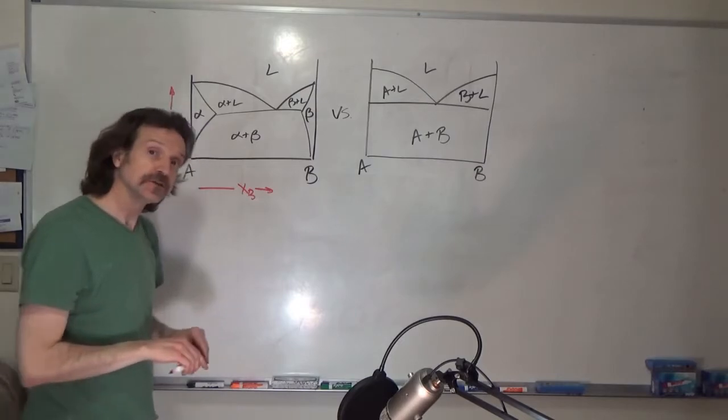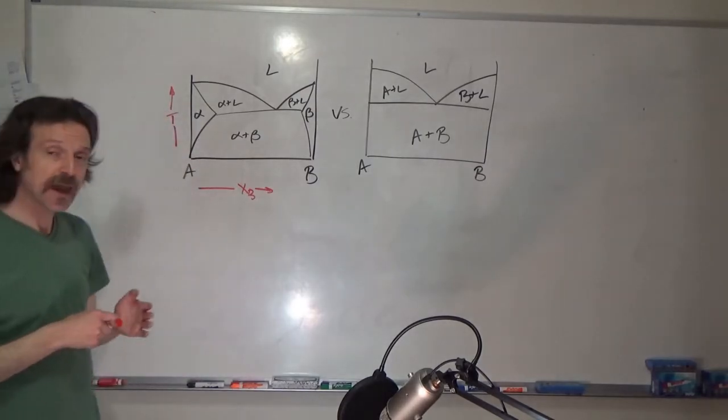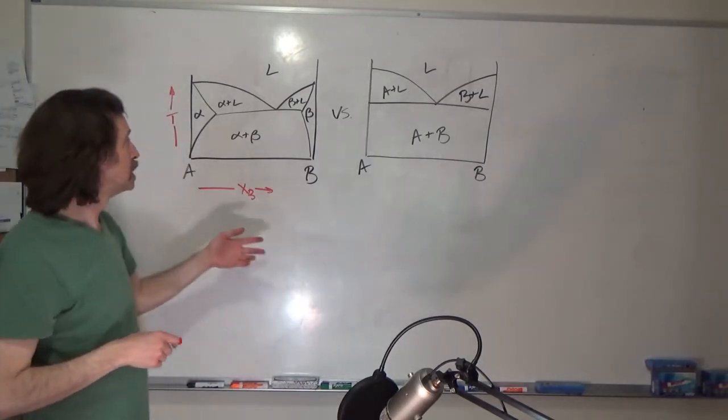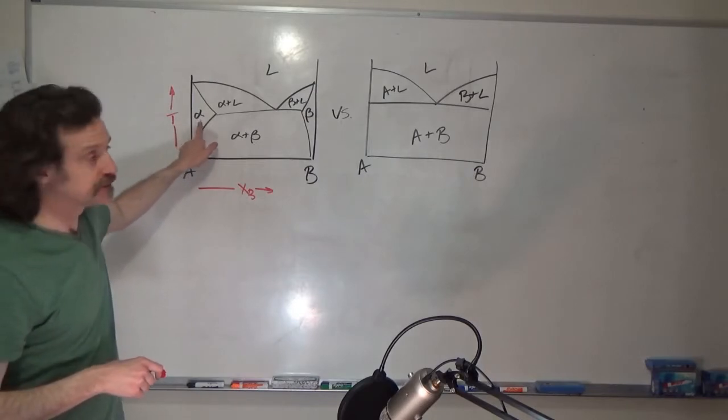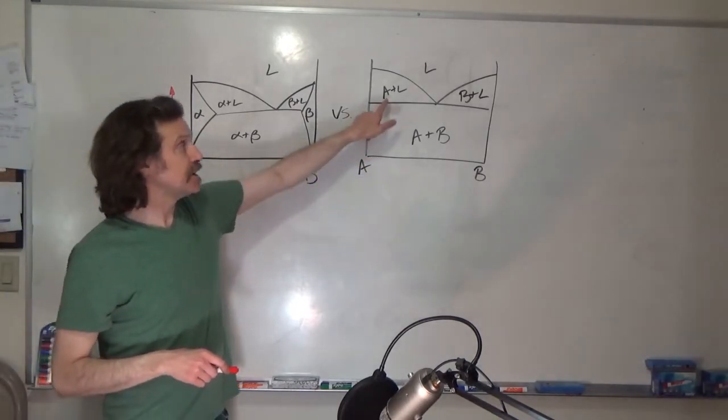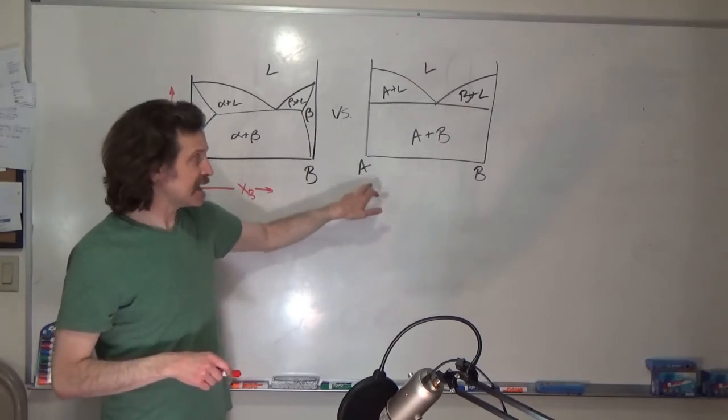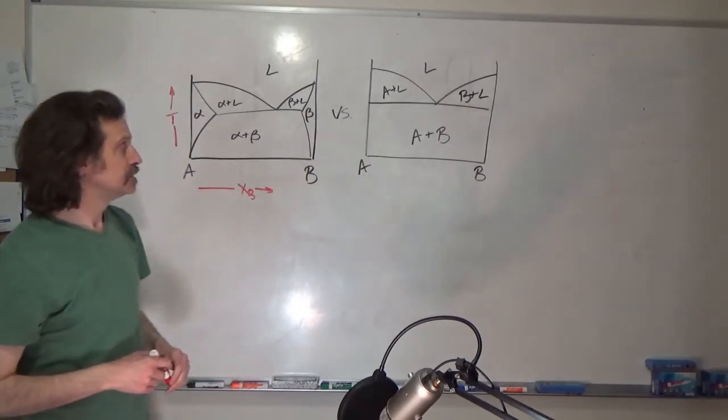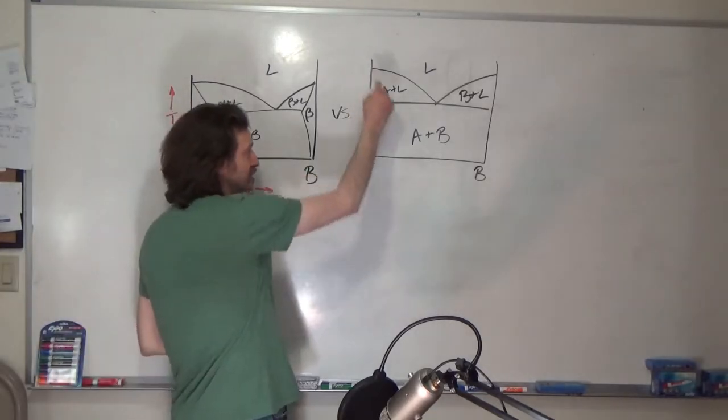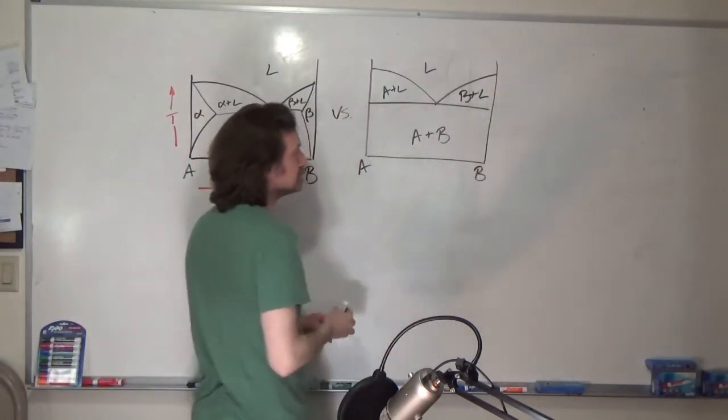In terms of our nomenclature, when you have a line compound, instead of using Greek letters, it's now customary just to use the constituent name. For example, A and B. So this line corresponds to A, this line corresponds to B.